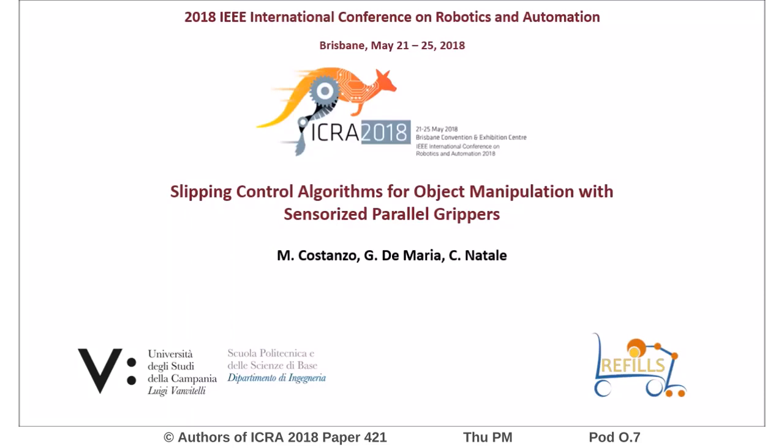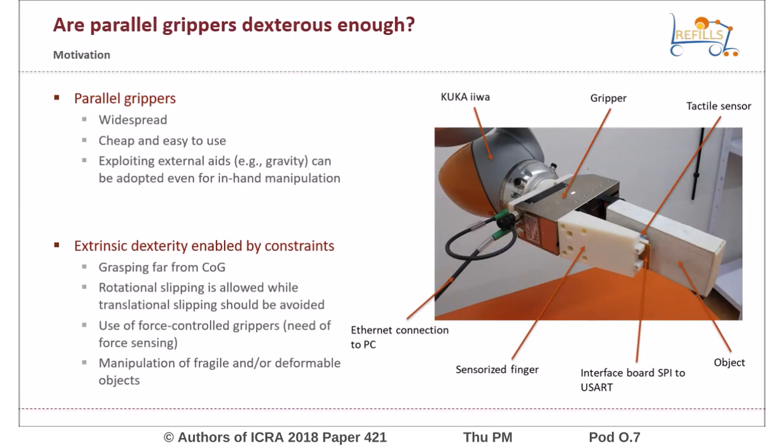This research work was carried out at the University of Campania within their fifth project. Parallel jaw grippers are the most common devices used in industrial applications for object grasping.